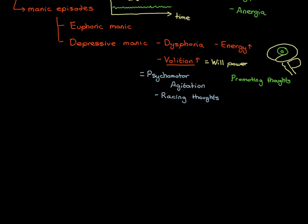With the racing thoughts, people also end up speaking really quickly — we describe that as pressured speech. Pressured speech means talking extremely fast, and again this is because their volition is extremely high. If your volition is extremely high you can talk extremely easily, and you will end up talking extremely fast along with the racing thoughts, because they are finding it far too easy to promote thoughts from being processed by a small portion of the brain to a larger one.